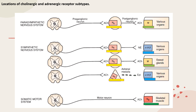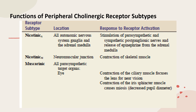This diagram shows the pharmacologically relevant responses from activation of the three major subtypes of cholinergic receptors: nicotinic N, nicotinic M, and muscarinic. For nicotinic N receptors, located at all autonomic nervous system ganglia and the adrenal medulla, activation stimulates parasympathetic and sympathetic ganglionic nerves and causes release of epinephrine from the adrenal medulla. For nicotinic M receptors, located at the neuromuscular junction, activation causes contraction of skeletal muscle. Muscarinic receptors are located on all parasympathetic organs.